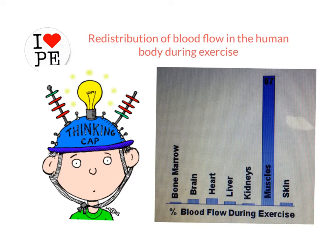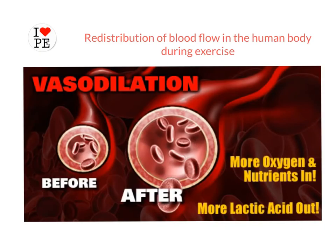We're now going to look at how and why this redistribution of blood flow occurs, and a little bit later we'll look at an exam question with an answer. This redistribution occurs due to vasodilation — the process by which blood vessels in the body relax and widen, allowing for greater blood flow.